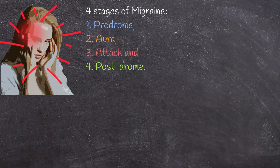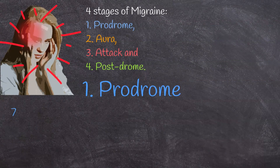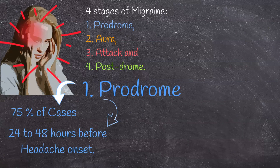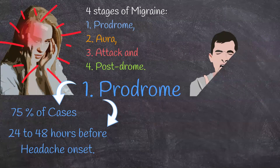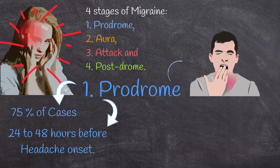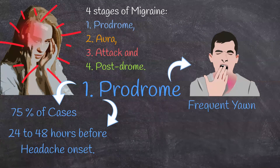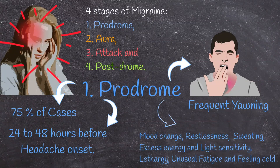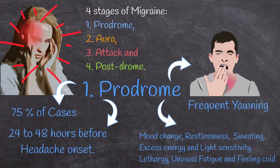Aura is the second phase out of four phases presented in a migraine attack. The first phase is prodrome. Around 77% of patients suffer prodrome symptoms, which occur up to 24 to 48 hours before headache onset. Prodrome symptoms include frequent yawning, which is the most common symptom, as well as mood change, restlessness, sweating, excess energy, light sensitivity, or opposite symptoms such as lethargy, unusual fatigue, and feeling cold.